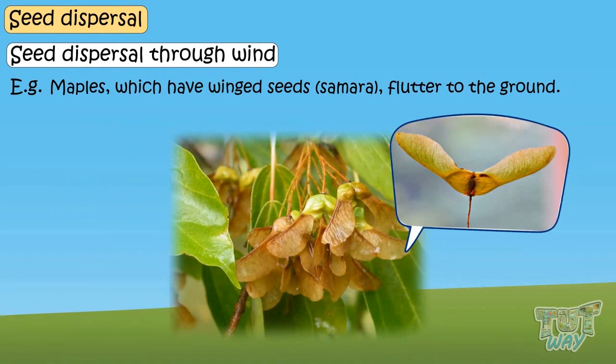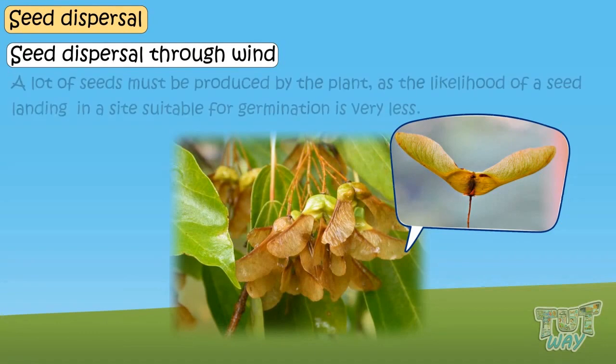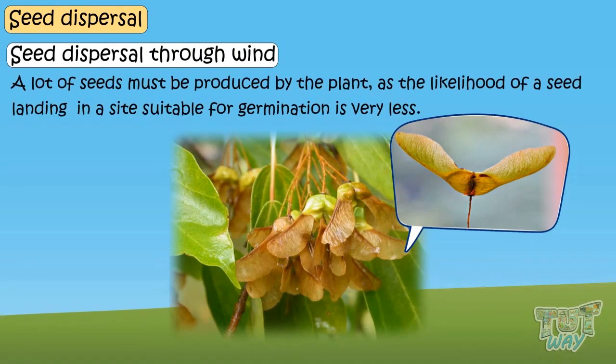An important constraint in case of wind dispersal is that a lot of seeds must be produced by the plant, as likelihood of a seed landing in a site suitable for germination is very less.